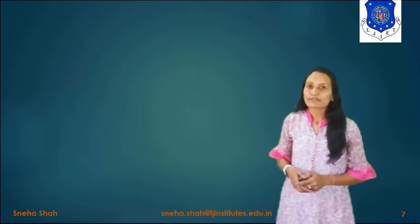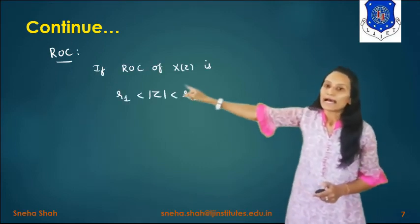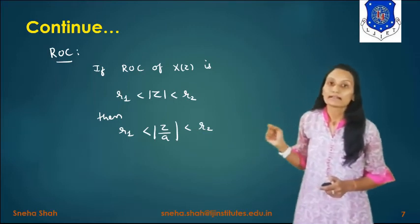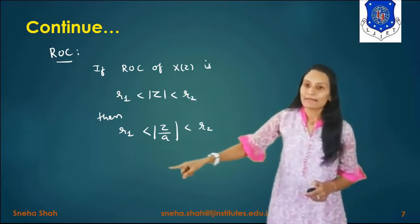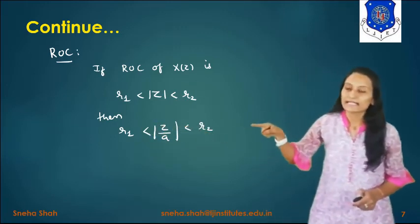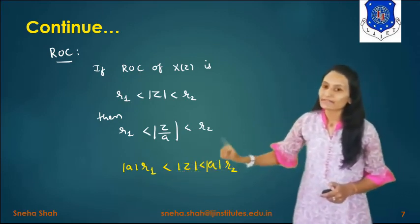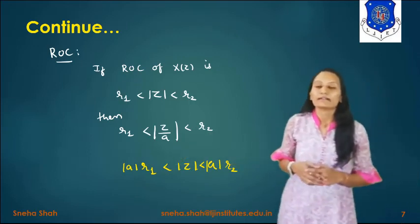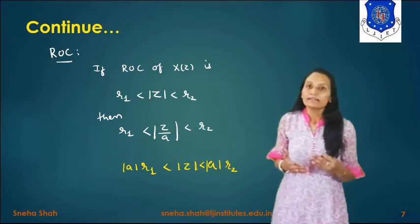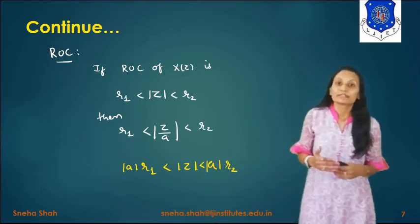For the ROC of the scaling property: if the ROC of X(z) is r1 < |z| < r2, then for the scaled version we replace z with z/a. So the ROC satisfies r1 < |z/a| < r2, which simplifies to |a|·r1 < |z| < |a|·r2. This gives the final ROC as |a|·r1 to |a|·r2. This way we can find the ROC using the properties of Z-transform.